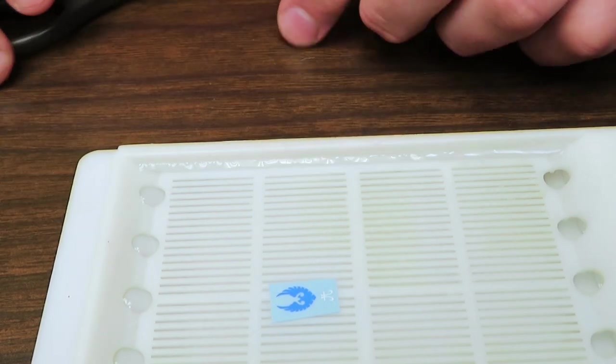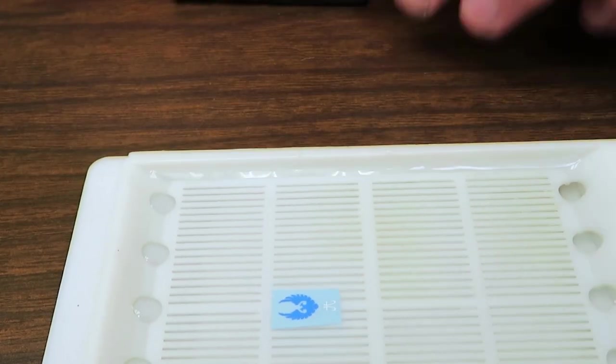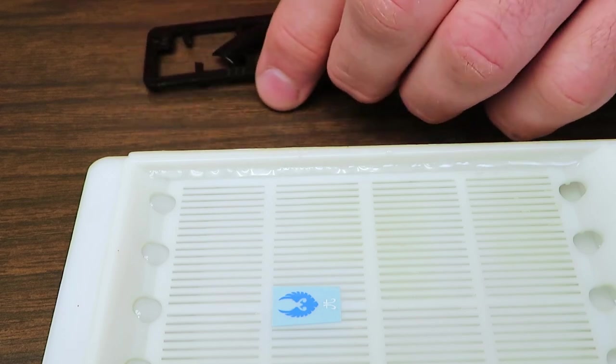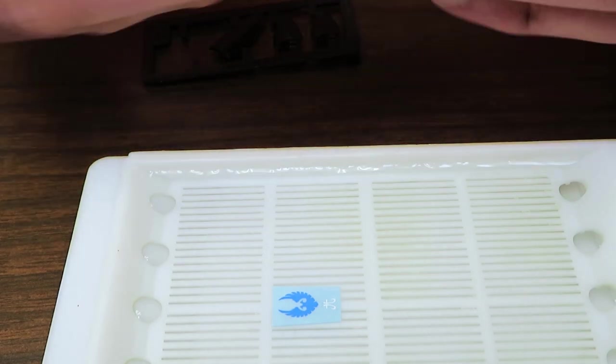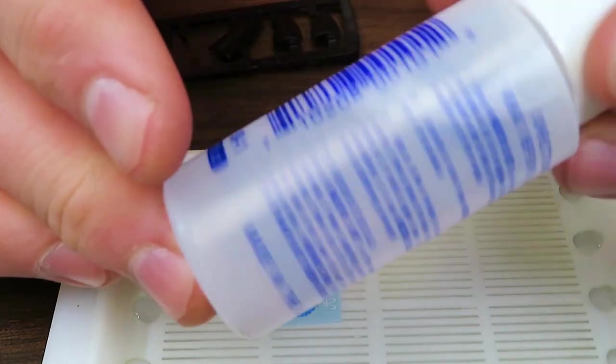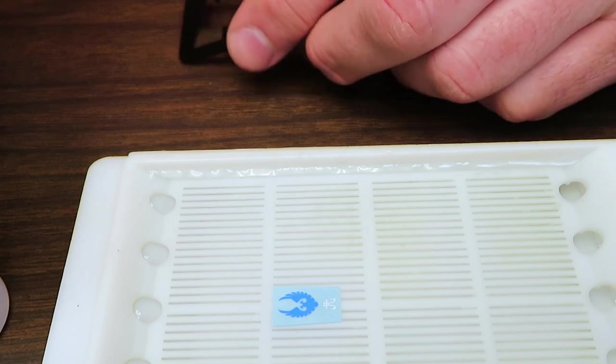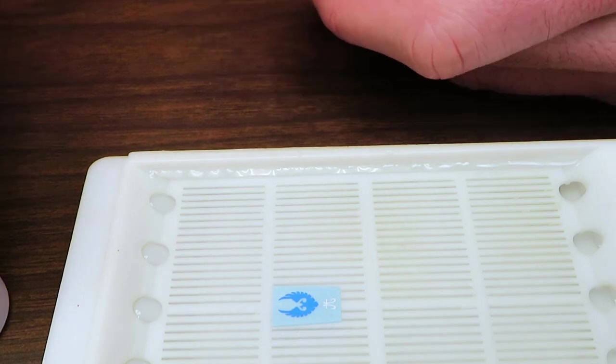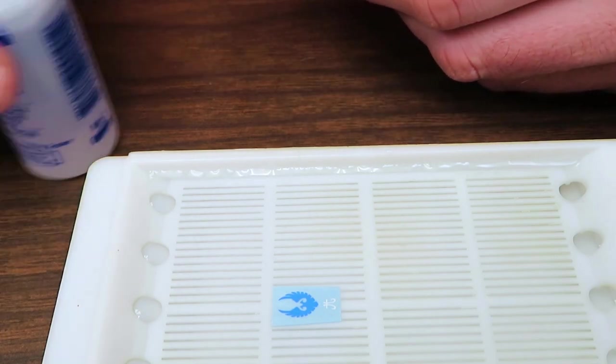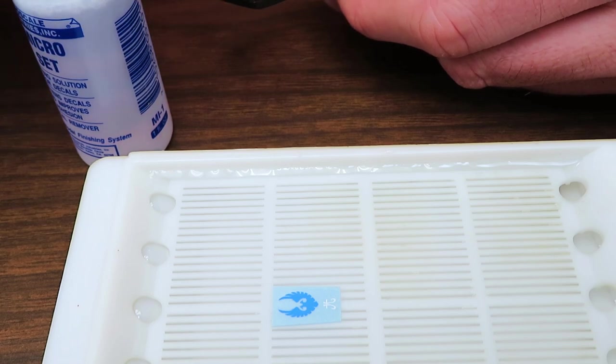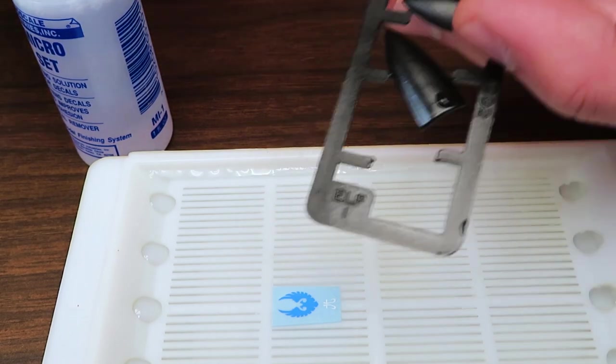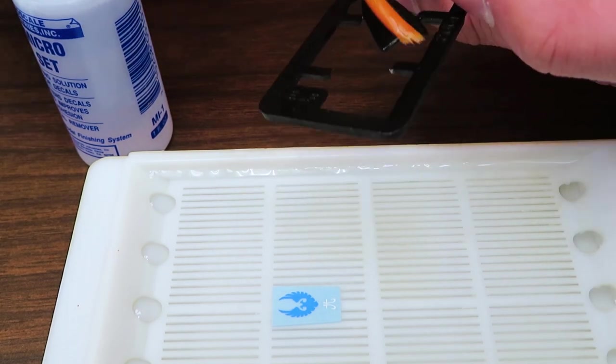So now we got our decal on the tray. This usually takes about 30 seconds or so for it to release. So in that time I'm going to take my micro set and brush it on my shield. We're just dipping right out of the container here. I'm going to take the shield and brush it on.